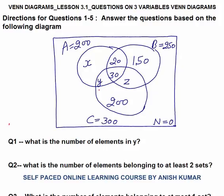The three sets are given: set A has a total value of 200, set B has a total value of 250, and set C has a total value of 300. Now we need to find the value of x, y, and z. First we will fill this diagram.